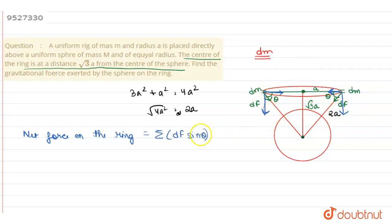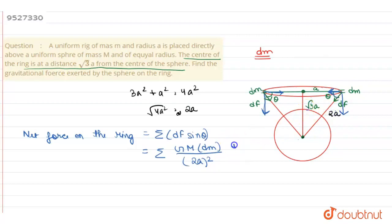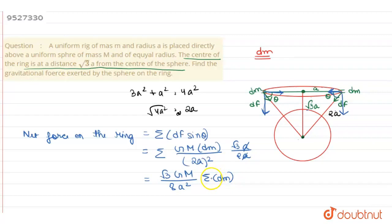These are the downward terms. So we can write: net force = summation of [G·M·dm / (2a)²] · sinθ. And sinθ = root(3a) / 2a. So the 'a' terms simplify, giving us root(3)·G·M / (8a²) times summation of dm. Since dm summed over the whole ring gives small m, the net force = root(3)·G·M·m / (8a²).